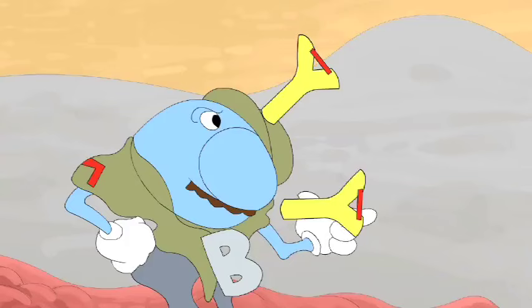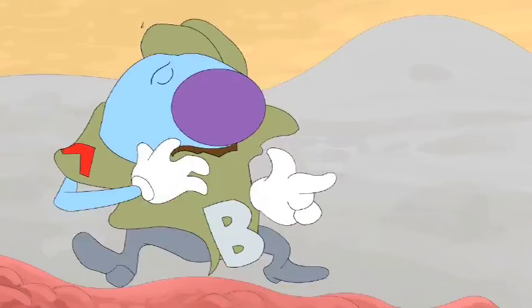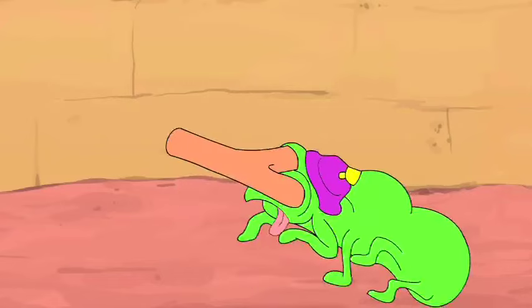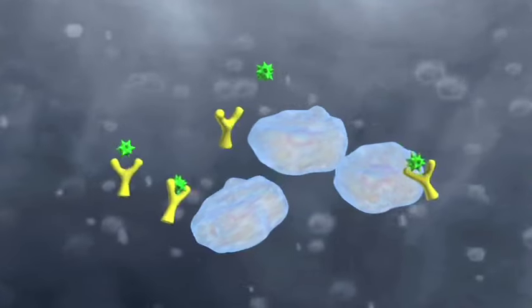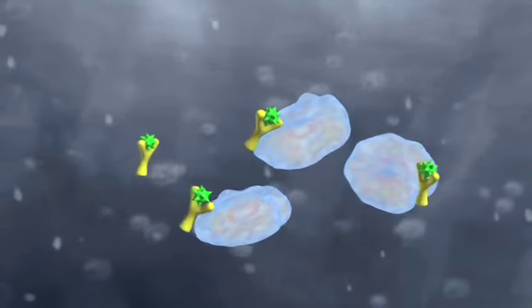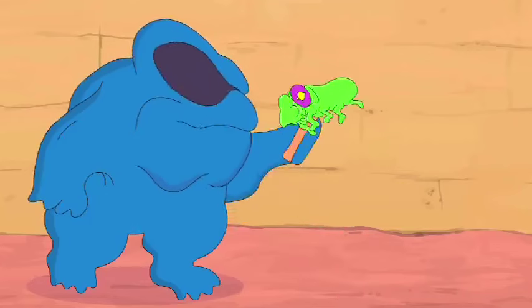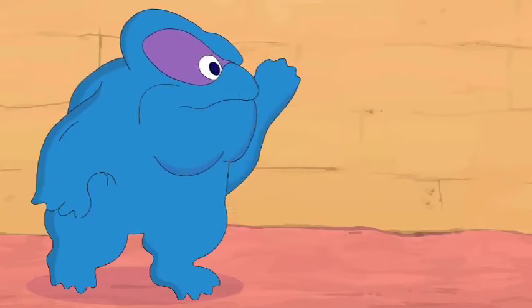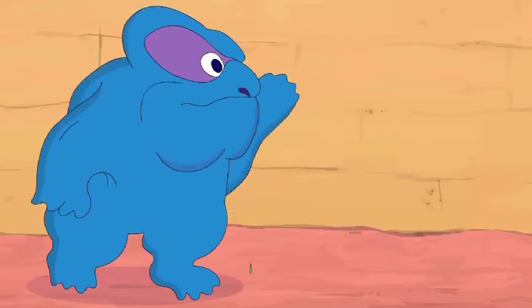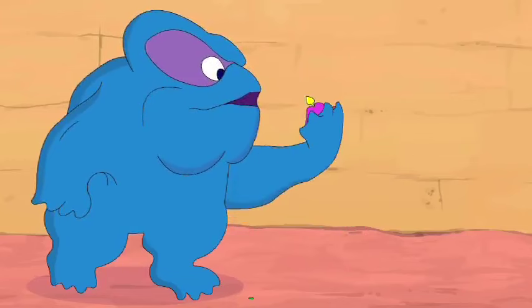B cells produce antibodies, substances that are designed to attack specific antigens. Phagocytes, like ravenous monsters working for the immune system, are large cells that eat antigens, capturing and destroying microbes and other foreign particles.